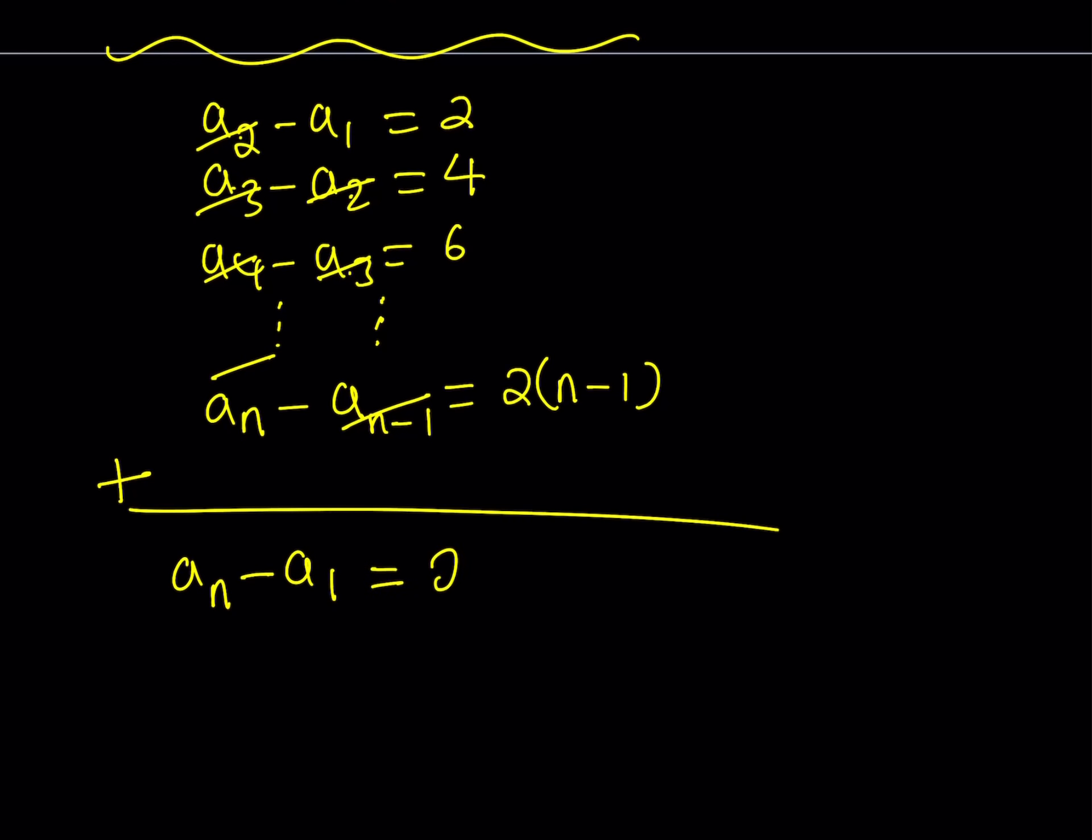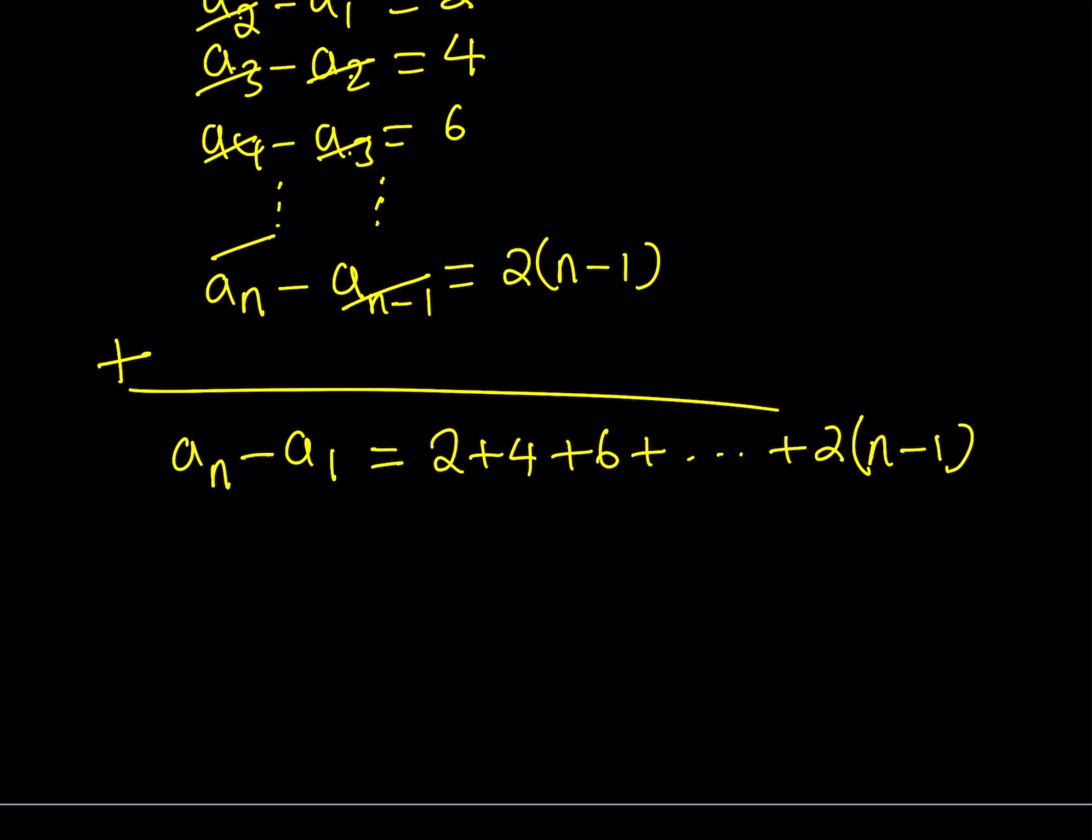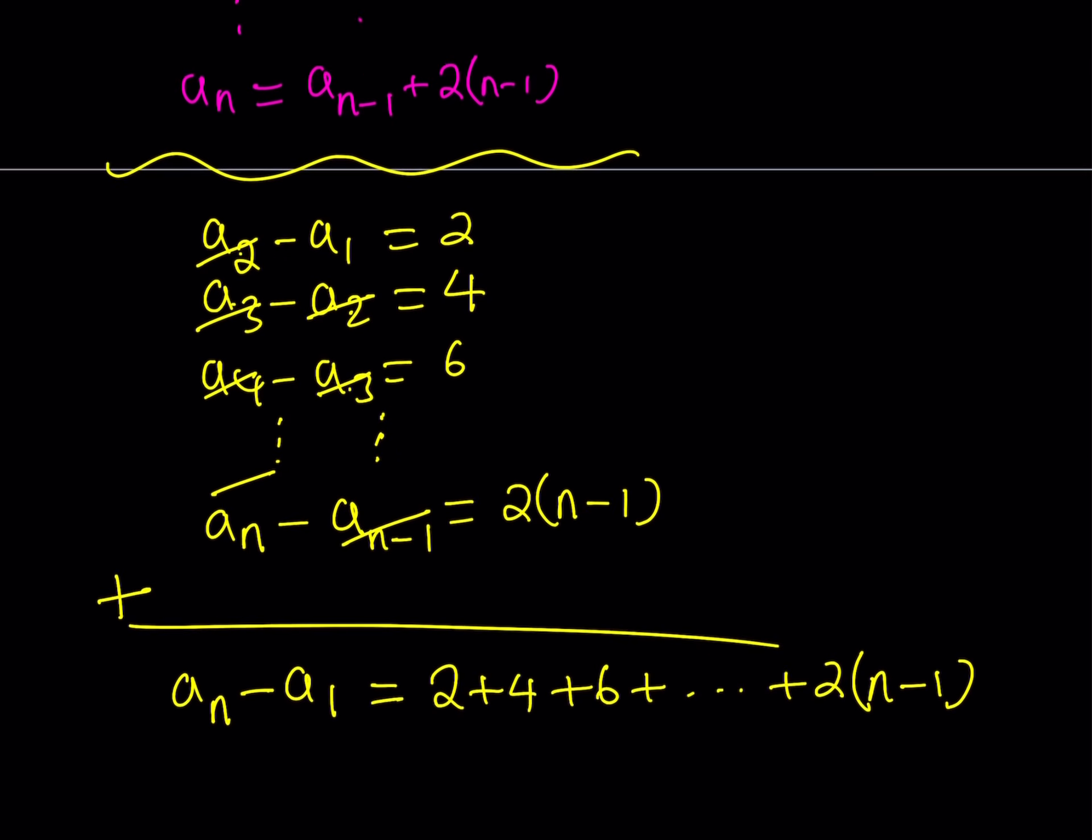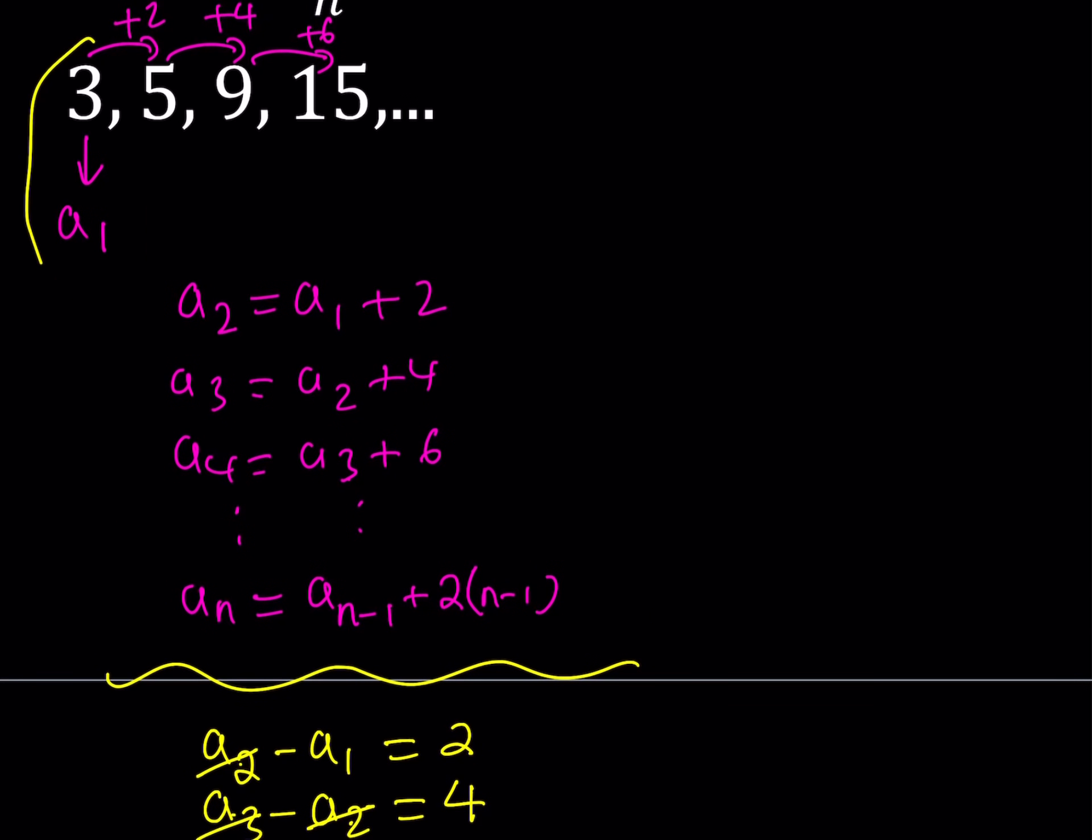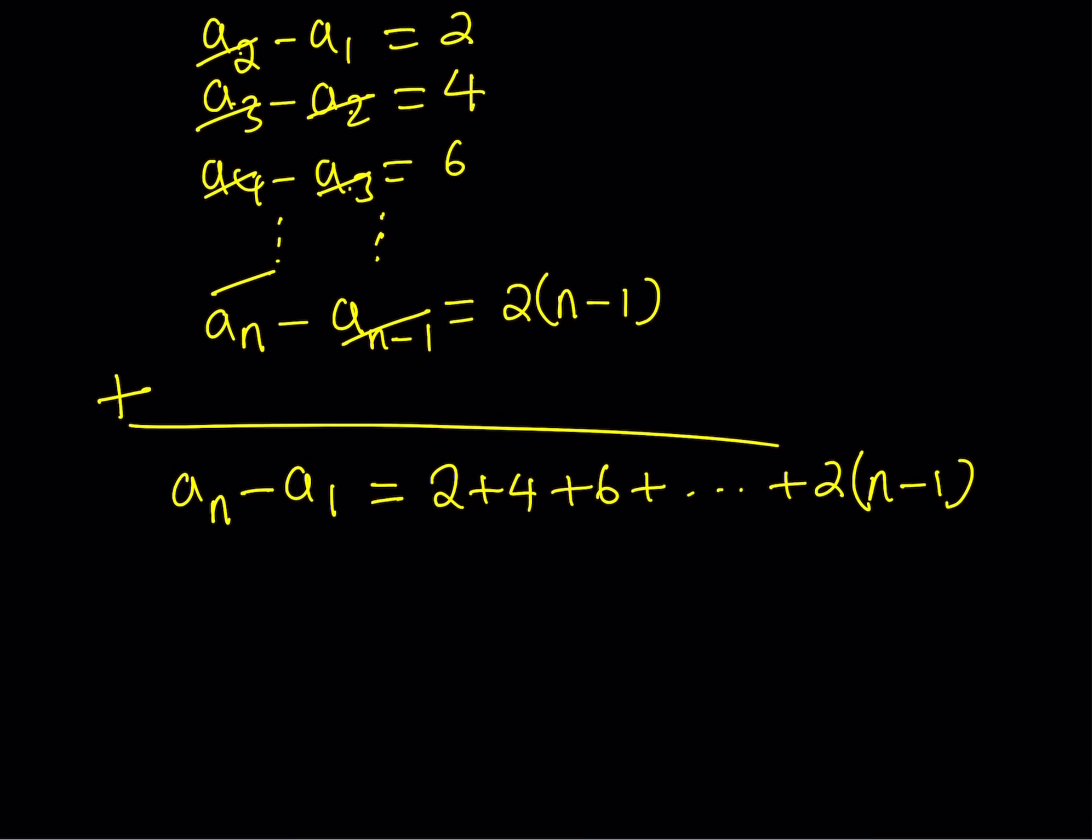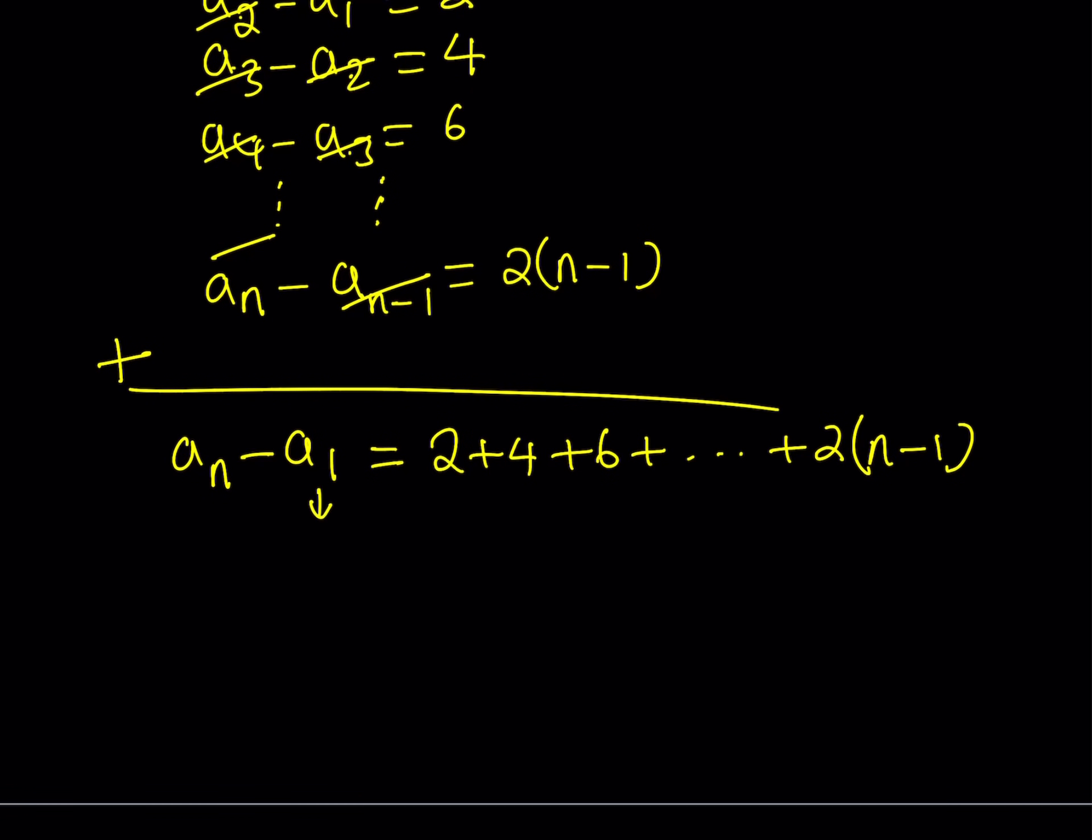And on the right hand side we can write this as a sum for now. Let's go ahead and do that. And then I'd like to simplify this. And how can I do that? And also notice that a1 is equal to 3. Because the first term of the sequence was given as 3. And that was a sub 1 as you know. So we're going to use that information here. Replace a sub 1 with 3. So this gives me a sub n minus 3 equals the sum on the right hand side.